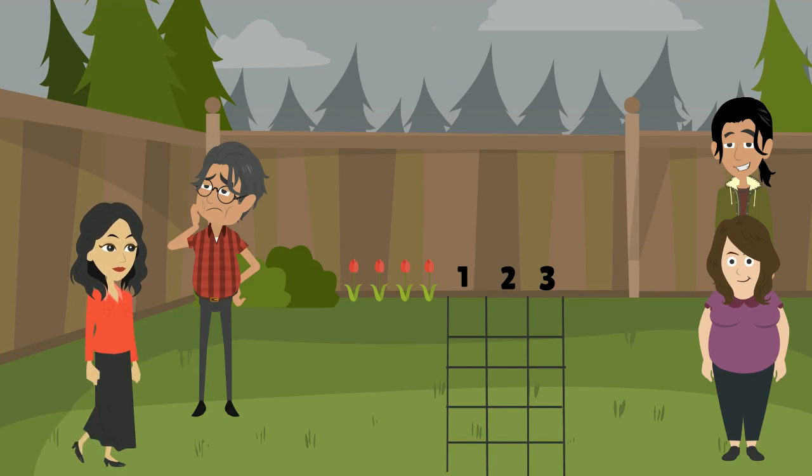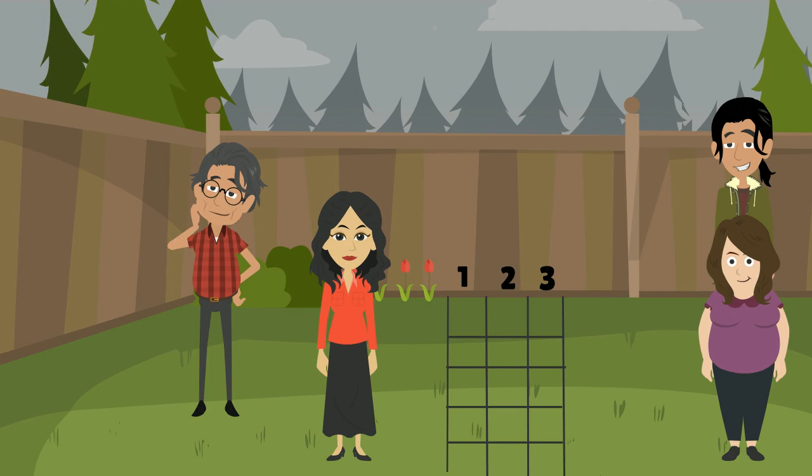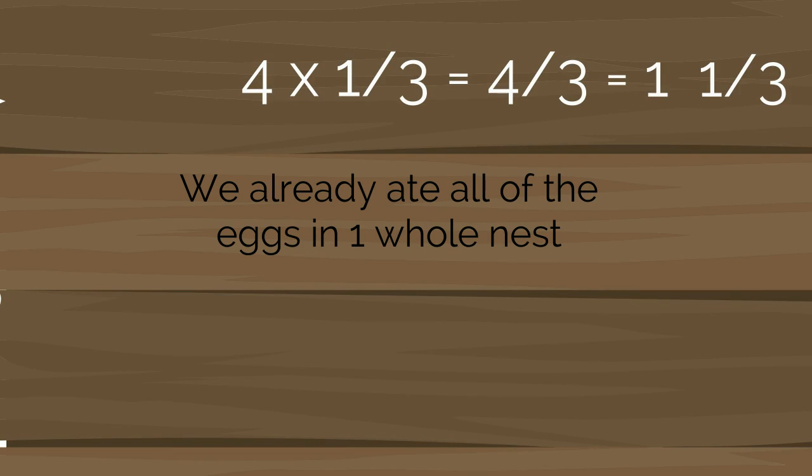But what if 3 people came to visit? Then it would be 4 people all together. 4 times 1/3 equals 4/3. We already ate the eggs in 1 whole nest. 4/3 equals 1 and 1/3.